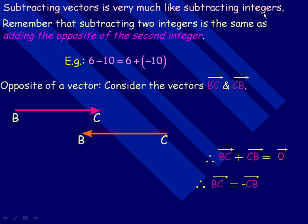Subtracting vectors is very much like subtracting integers. Here's the example I'll use with integers before we get into vectors. Subtracting two integers is the same as adding the opposite of the second integer. For example, 6 subtract 10 is the same as 6 plus negative 10. So there's changing subtracting a positive into adding the opposite, adding a negative.